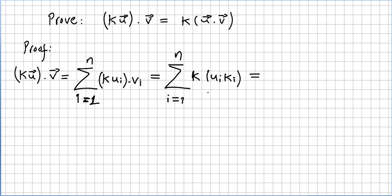And we proved in a previous video that k, that this operation is associative. So kui times vi equals k times ui. Please check a previous video for this.